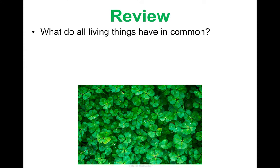Plants are living things, and there are certain characteristics that all living things have in common. All living things are made of cells, the most basic unit of life. All living things have some sort of genetic material, whether that be DNA or RNA or both. All living things respond to stimuli, they all grow and reproduce, and they all have the ability to adapt to their environment. These all apply to plants as well, because plants are living things.